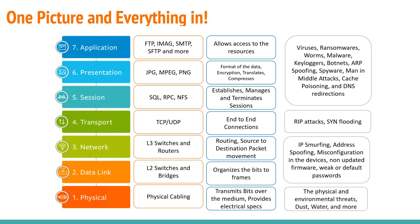At the application layer, the range of possible attacks is vast: viruses, ransomware, worms, malware, keyloggers, botnets, ARP spoofing, spyware, man-in-the-middle attacks, cache poisoning, DNS redirections, and many more. To summarize: layer 1 has environmental threats; layers 2 and 3 have spoofing, smurfing, misconfiguration, firmware, and password issues; layer 4 has RIP attacks and SYN flooding; and layers 5, 6, and 7 have a vast range of attacks.